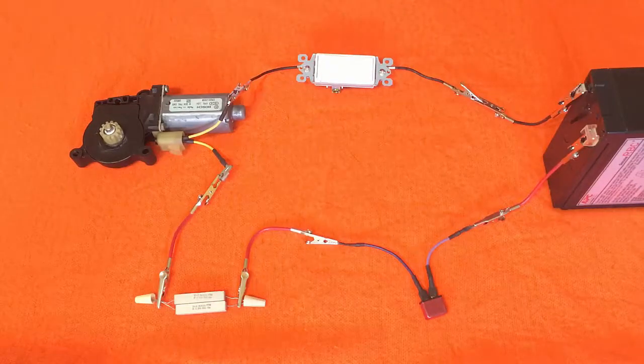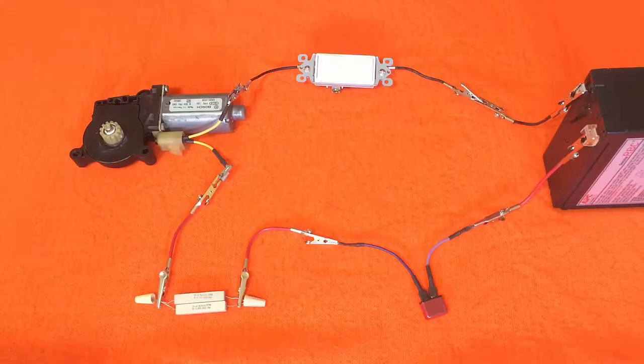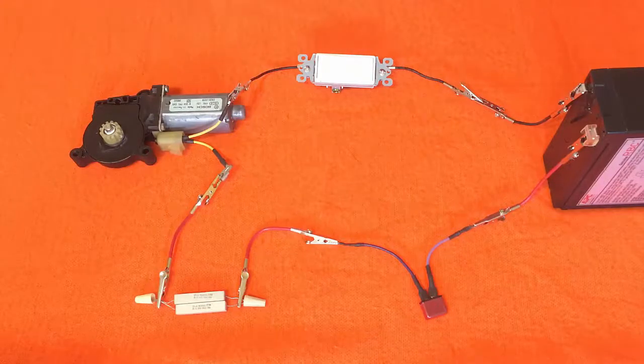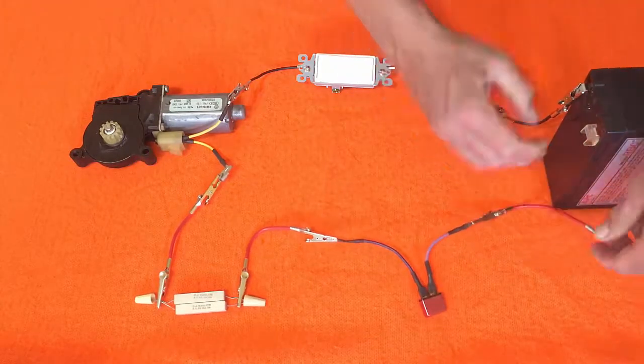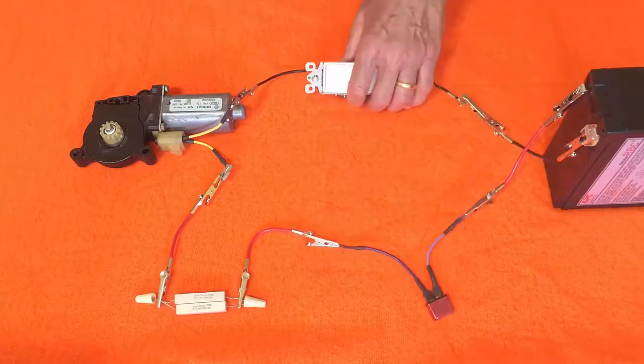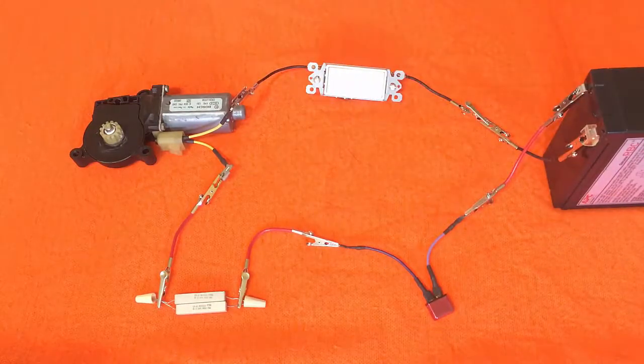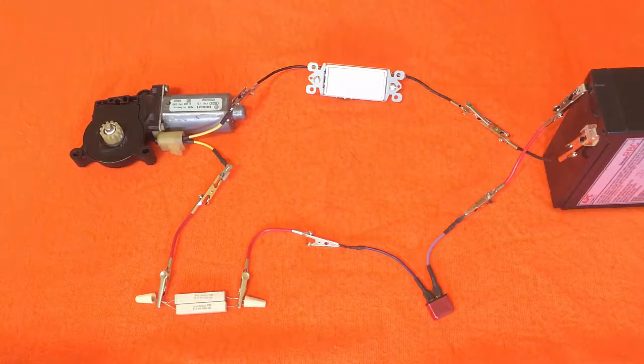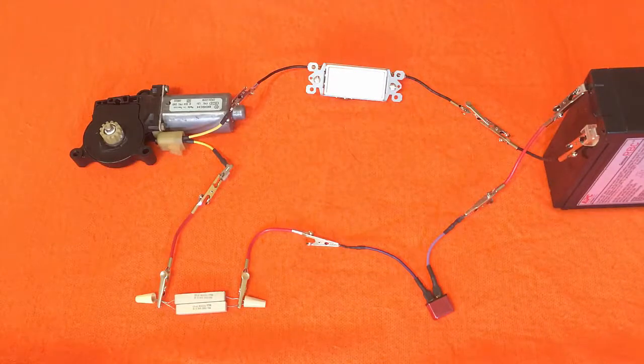What I'm going to do now is reverse the leads at the battery because it's easier to do it that way. So let's try that. I have the leads reversed at the battery and we're going to turn it on again. We're expecting it to spin in the counterclockwise direction, so let's see if it does.